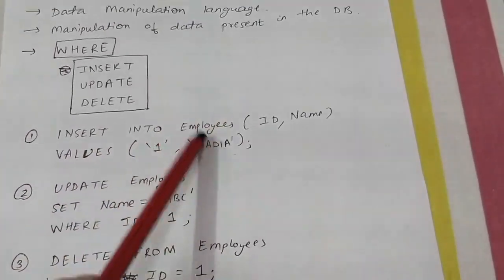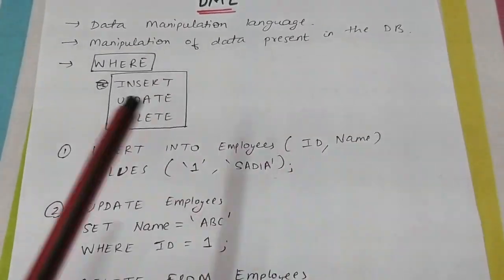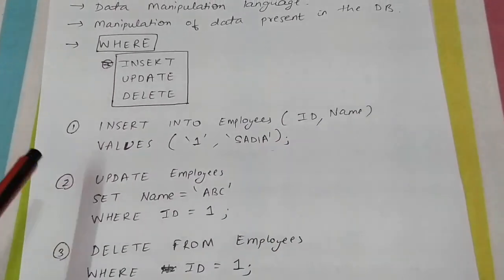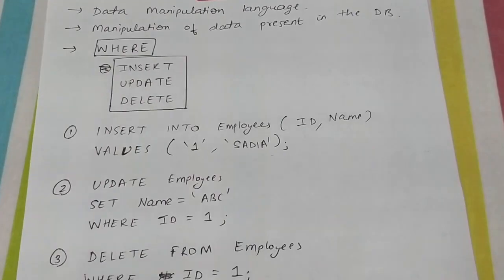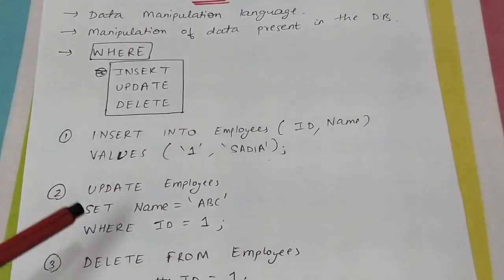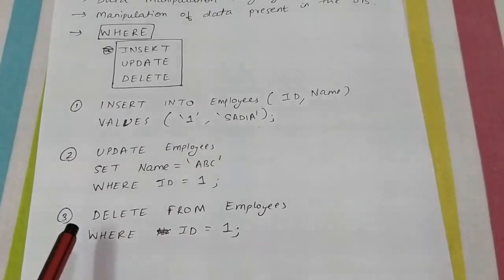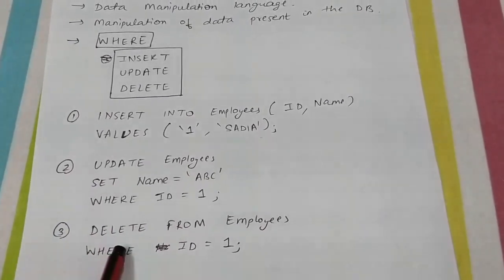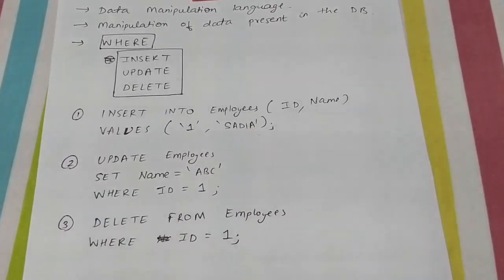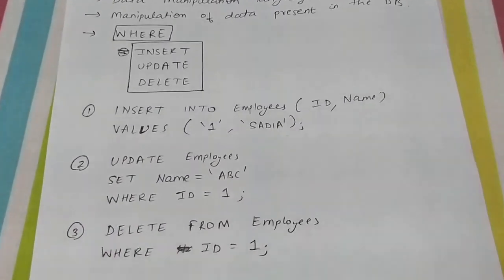INSERT example: INSERT INTO employees (column_name) VALUES (value). UPDATE example: UPDATE employees SET name = 'value' WHERE id = 1 — you are changing a value in a particular row. DELETE example: DELETE FROM employees WHERE id = 1 — deleting a particular row.